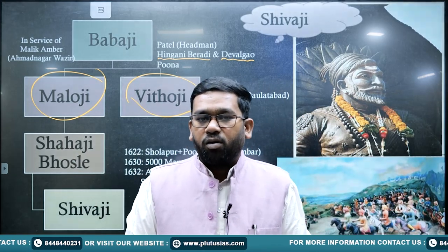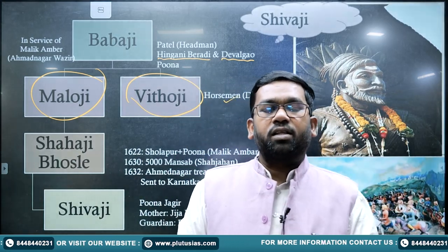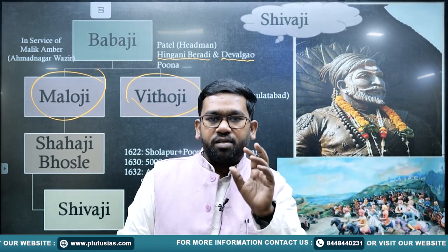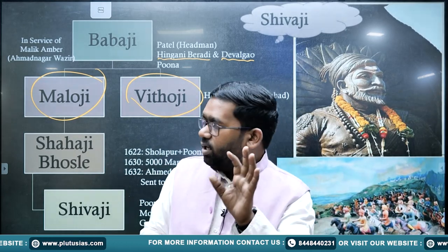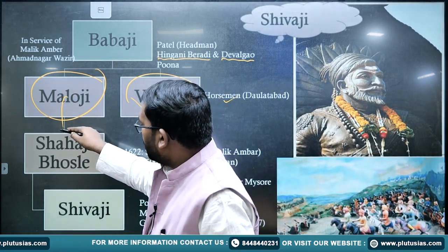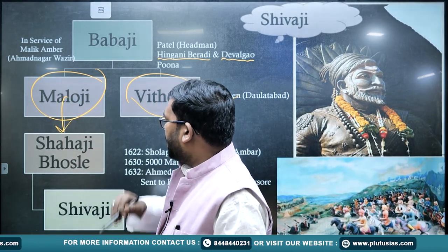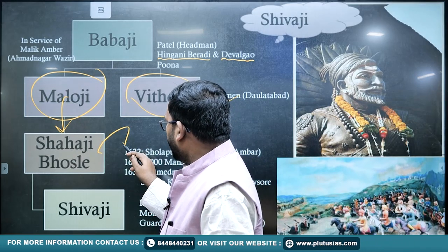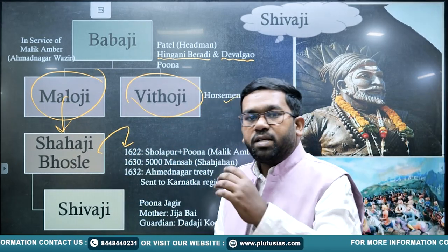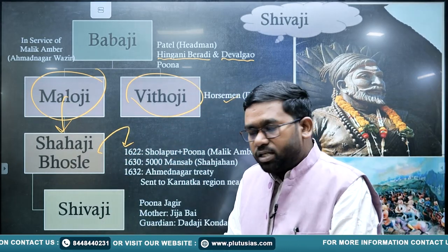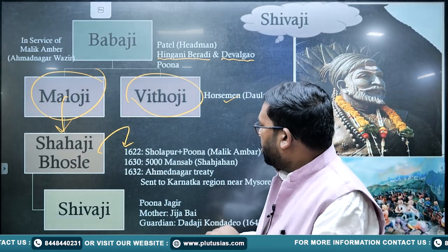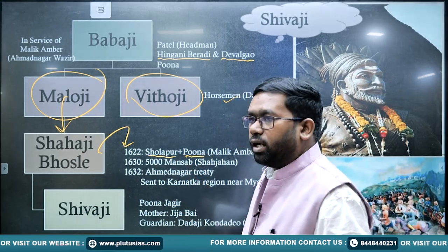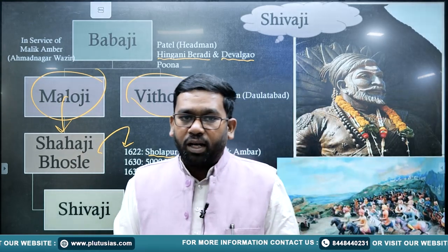Maloji was a military official, and his son Shahaji Bhosle became a Jagirdar by 1622, holding the jagir of the Solapur and Pune region under Malik Ambar.